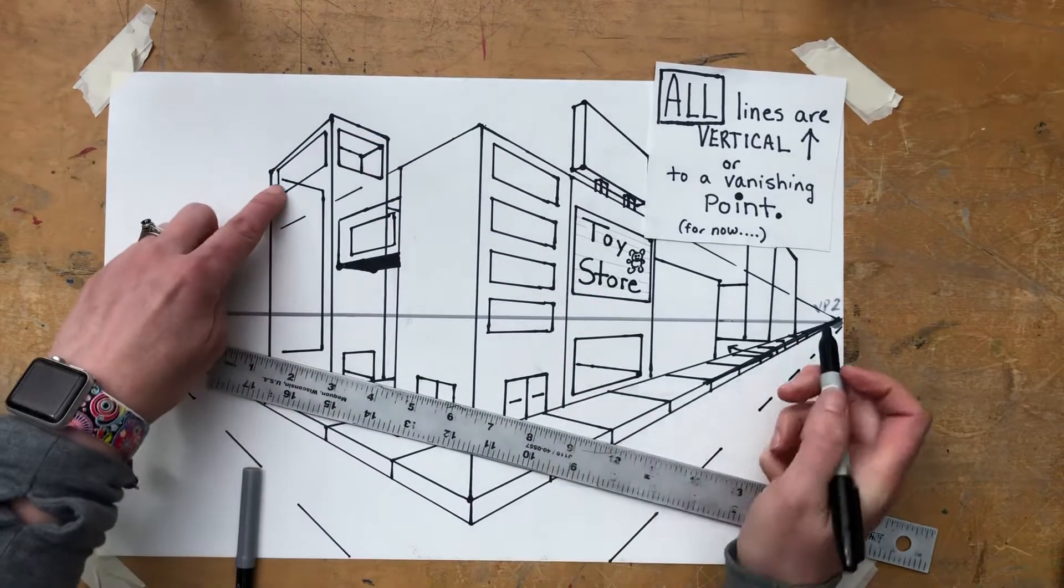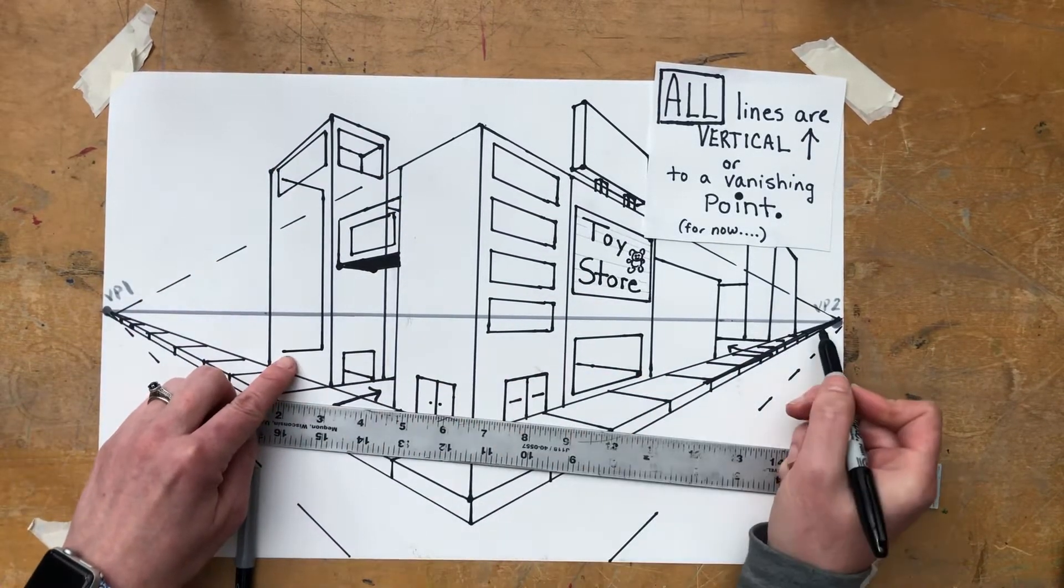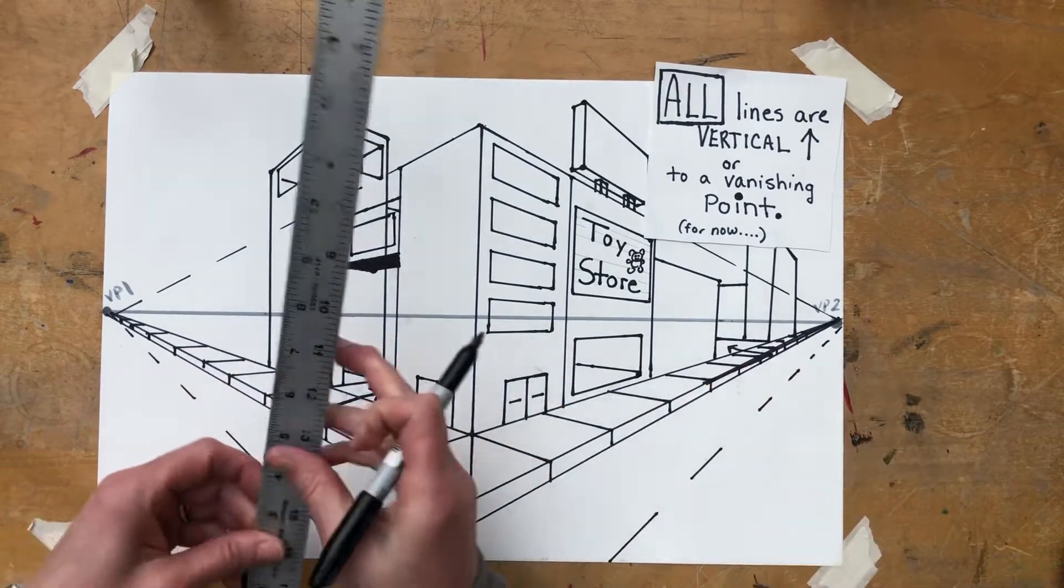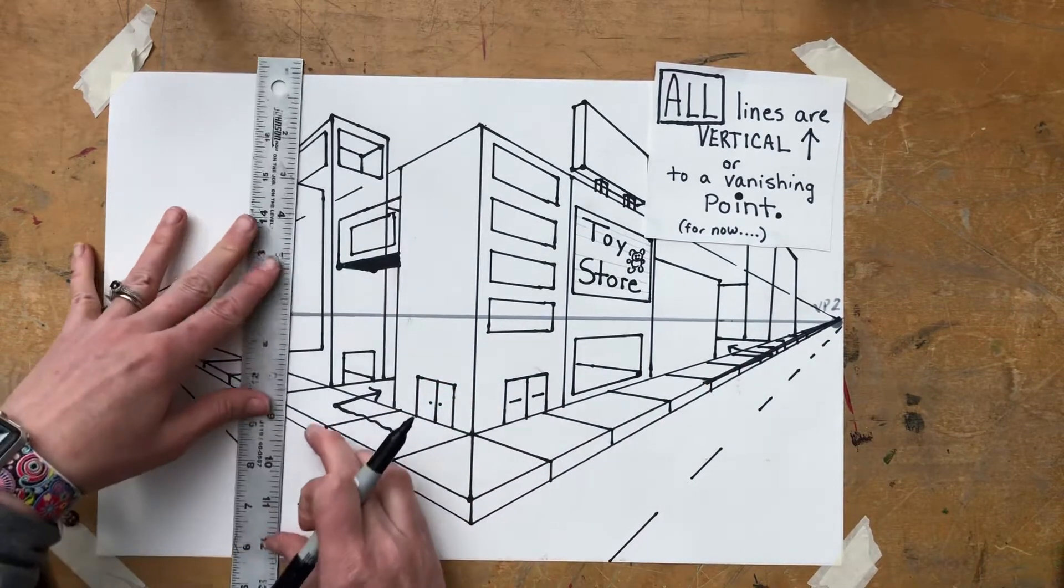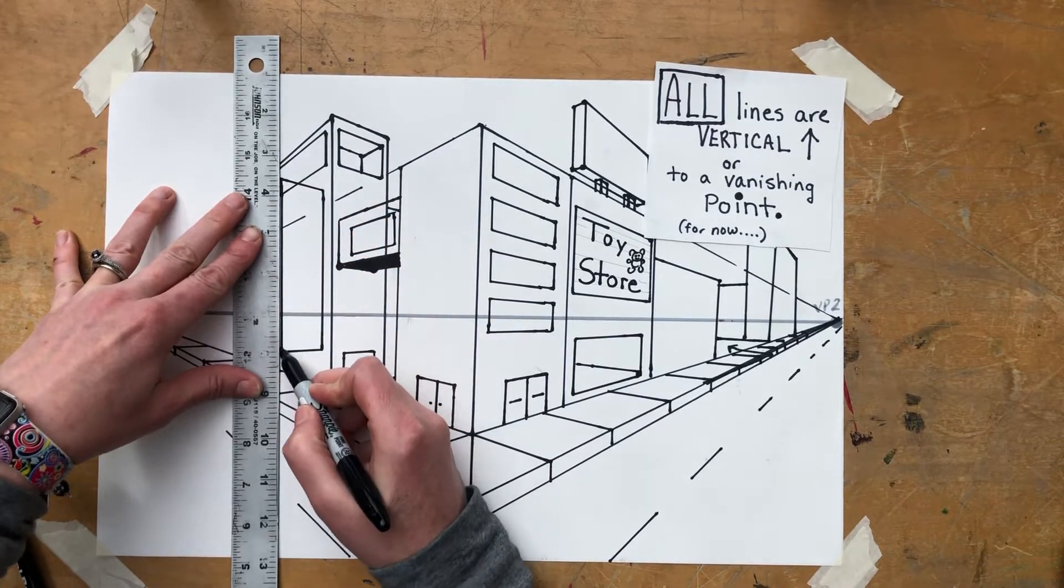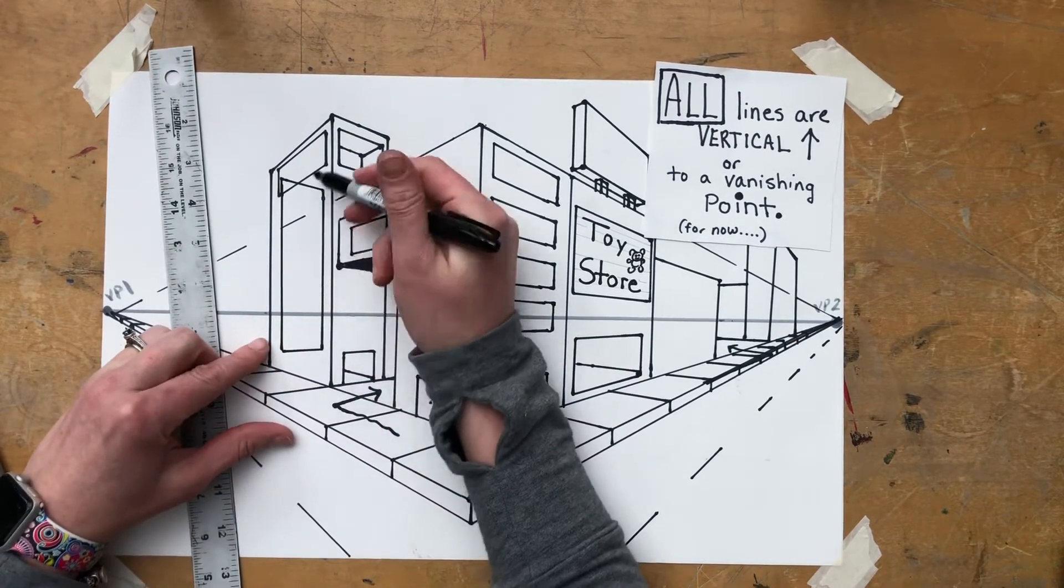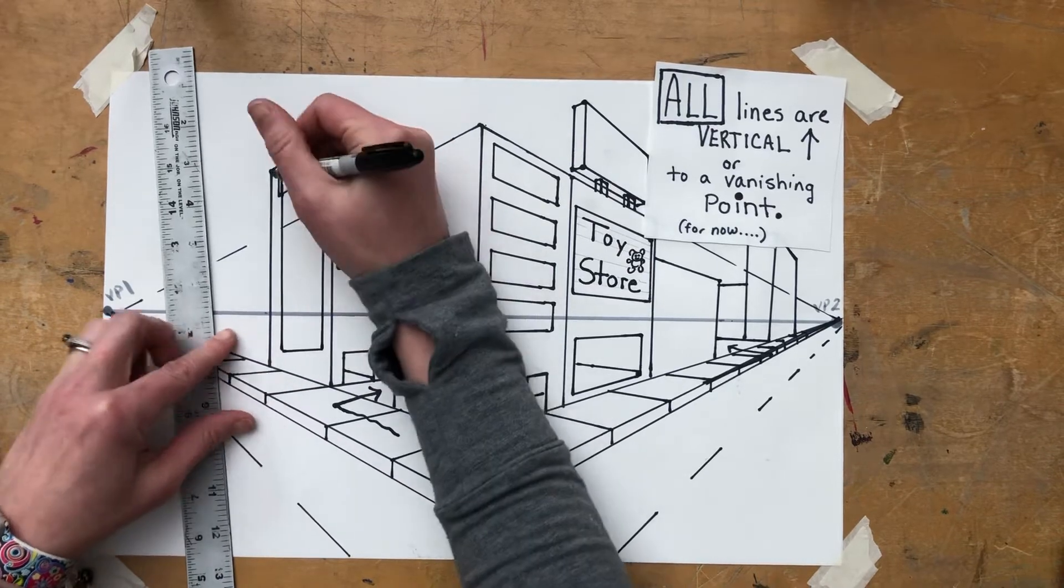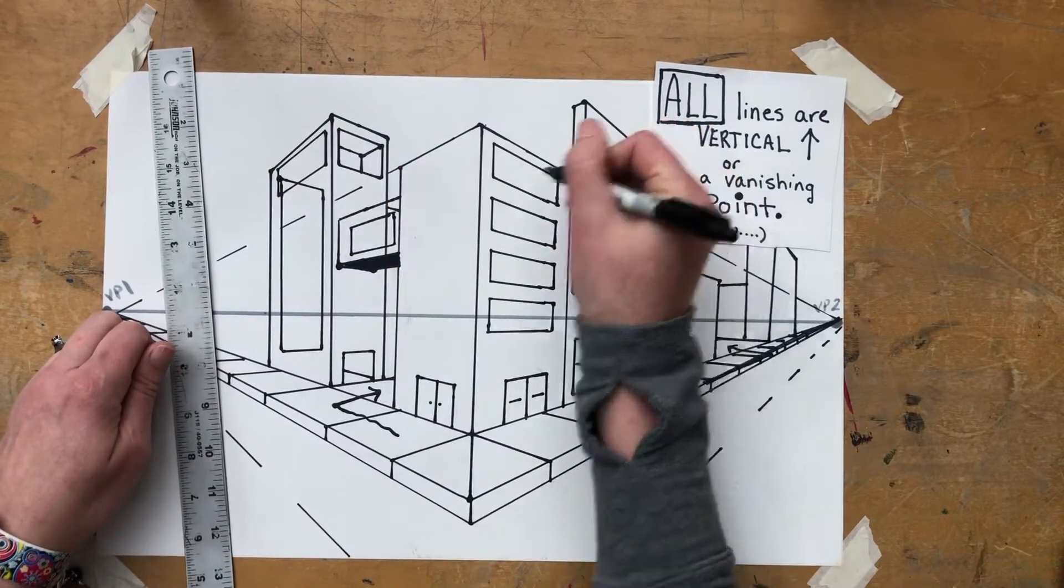Then if I connect those two arms with a vertical line, make sure your ruler is vertical, I have the side of a sign. Again, just like we did this one, if I take the closest points, line it up to vanishing point one.